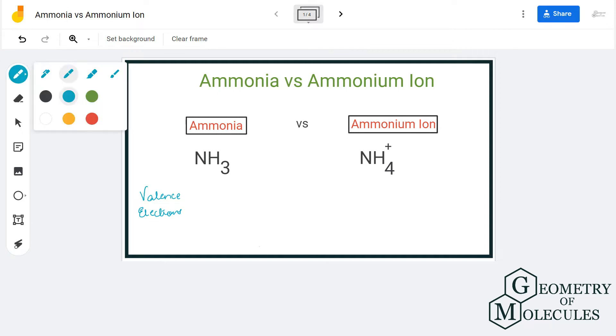To understand the differences, first we are going to look at the total number of valence electrons for both these molecules. NH3 has one nitrogen atom and three hydrogen atoms, and hence the valence electrons would be eight because nitrogen has five valence electrons and each hydrogen has one valence electron.